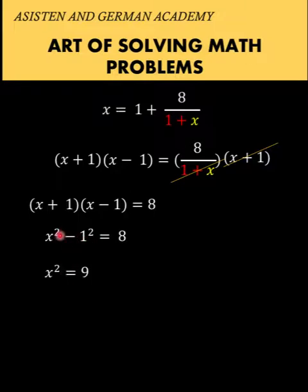Simplifying, we arrive at x squared equals 8 plus 1, which is 9. And so x is equal to 3 or x equals negative 3.